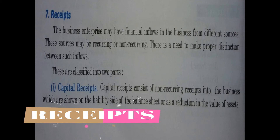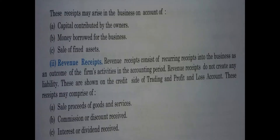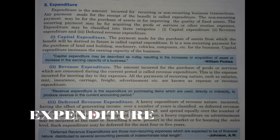A business enterprise may have financial receipts — all the money, profits, incomes, and gains. Receipts are of two types: capital receipts and revenue receipts. Capital receipts consist of non-recurring receipts into the business and are shown on the liability side of the balance sheet, or as a reduction in the value of assets. Capital receipts include capital contributed by owners, money borrowed for the business, or sale of fixed assets. Revenue receipts consist of recurring receipts, such as sale proceeds of goods and services, commission, or interest.